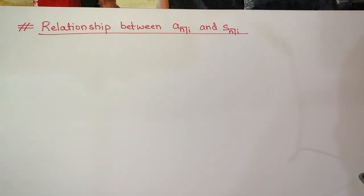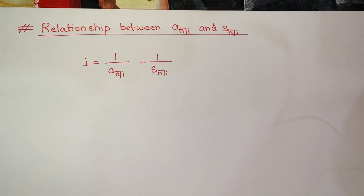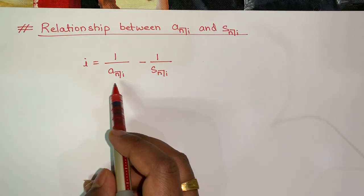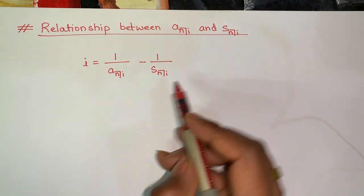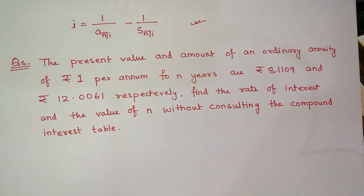There exists a relationship between A(n, i) and S(n, i). The relationship is: i = 1 / A(n, i) − 1 / S(n, i). Let's try to understand this relationship through a question.